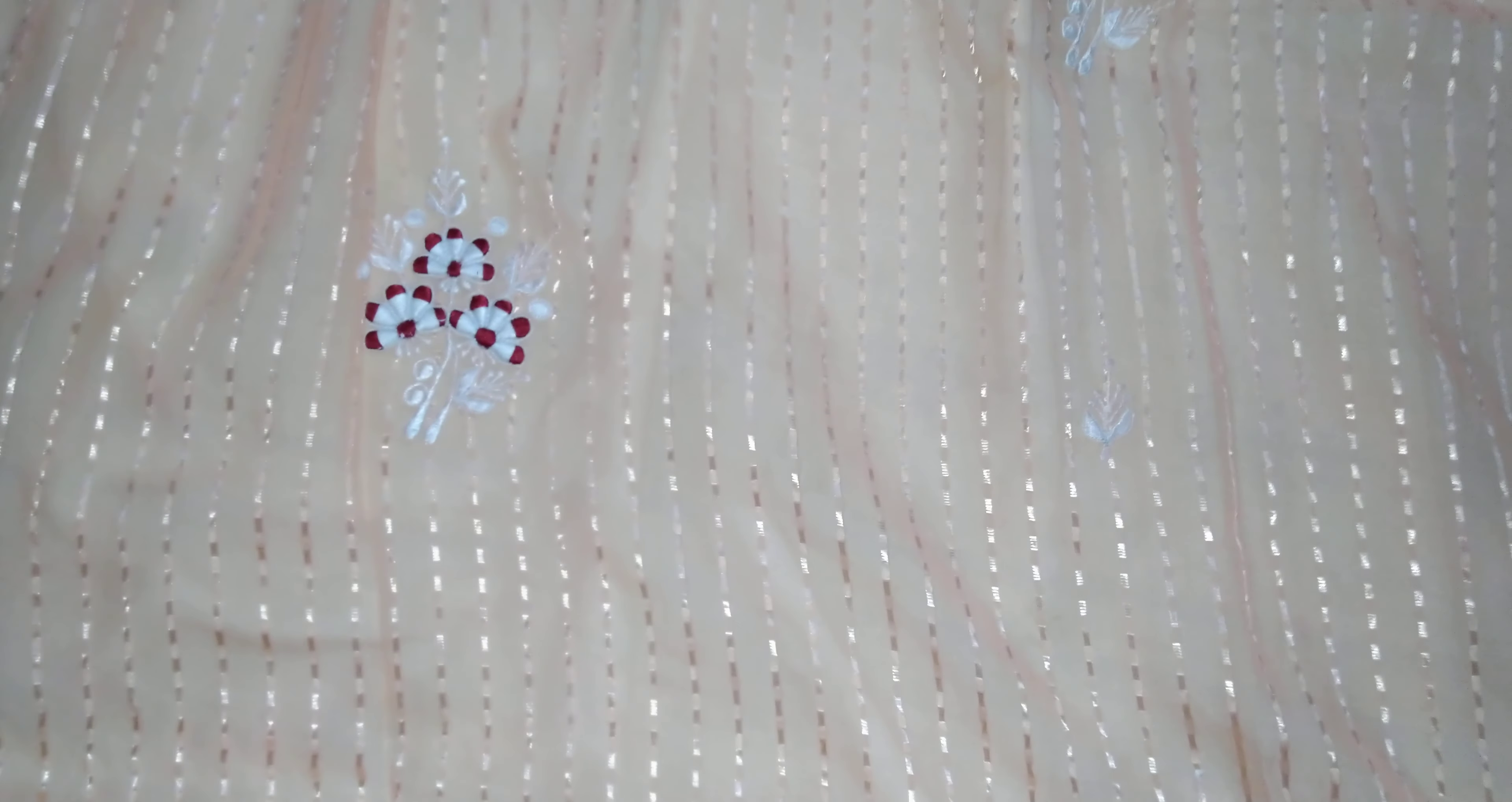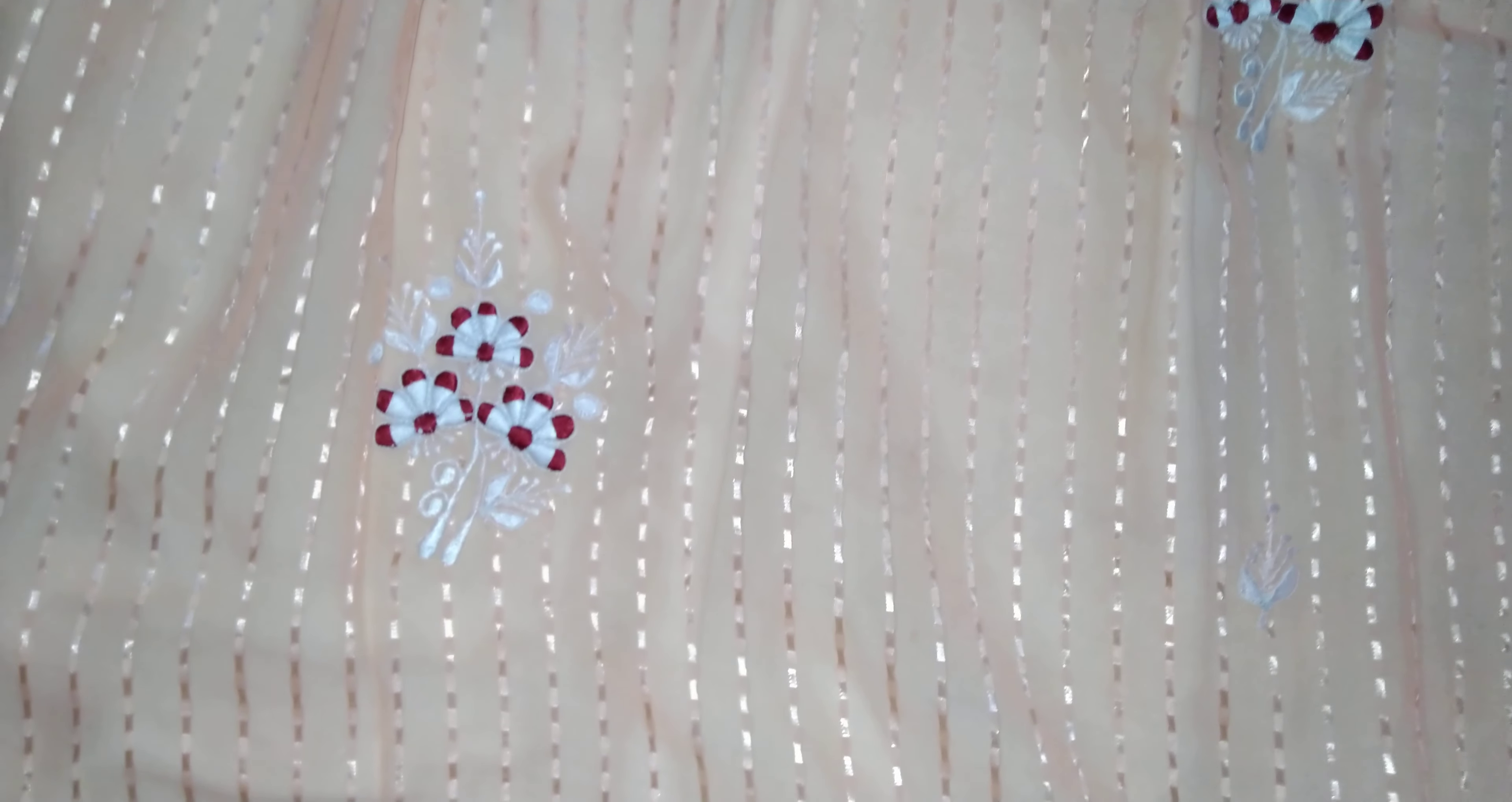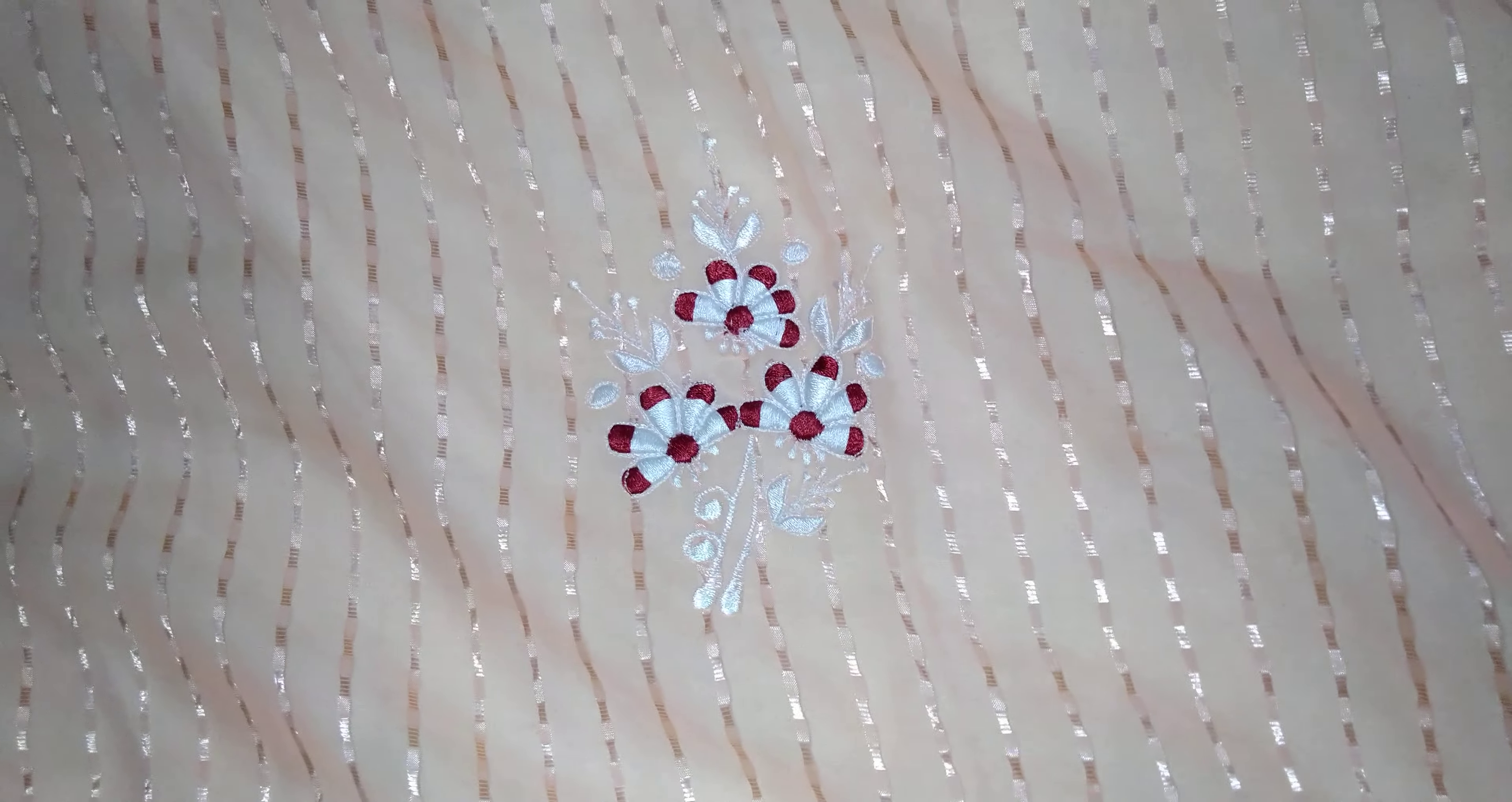Plain sari, sheer means a little shiny type, and this is the embroidery work done with the machine. See, beautiful. This is a ready-made sari and showing the embroidery work.